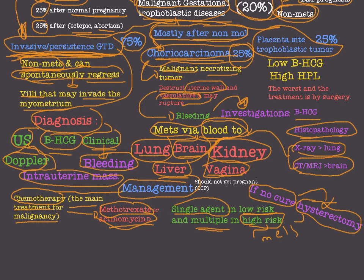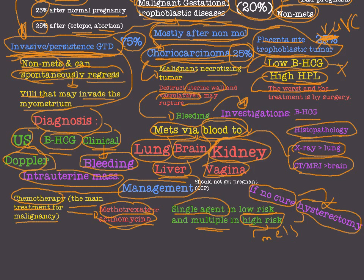Now let's move to the rarest and worst among them — placental site trophoblastic tumor. What distinguishes placental site trophoblastic tumor is that beta-hCG is usually low or lower than normal, unlike choriocarcinoma and invasive GTD which have very high beta-hCG. So beta-hCG cannot work as a tumor marker here; instead, human placental lactogen (hPL) is raised and can be used as a tumor marker.